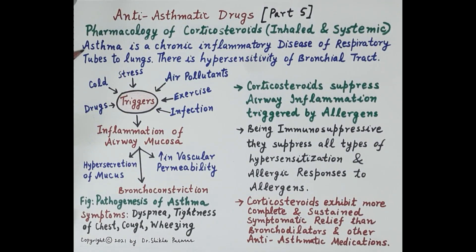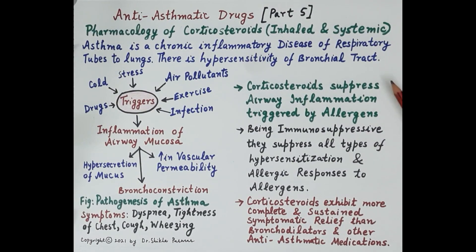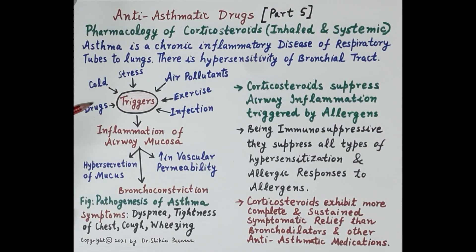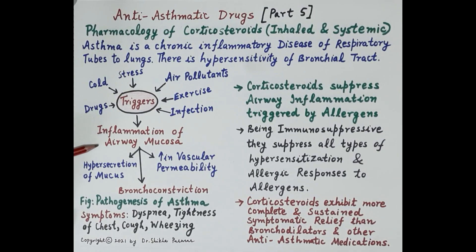To understand the role of corticosteroids, let's recapitulate the pathophysiology of asthma. Asthma is a chronic inflammatory disease of the respiratory tubes, with hypersensitivity of the bronchial tract. Common triggers like air pollutants, stress, cold, and exercise cause inflammation of the airway mucosa, which is the innermost lining of the wall of the respiratory tubes.